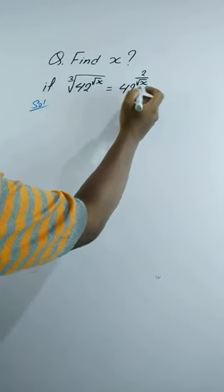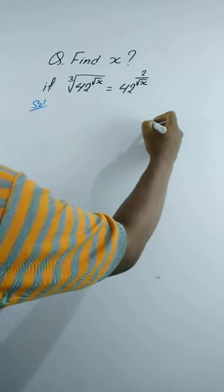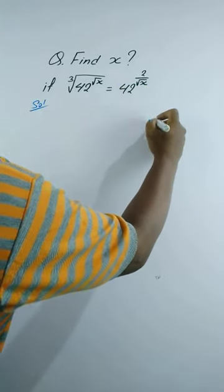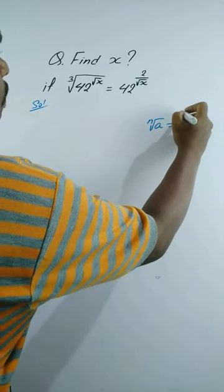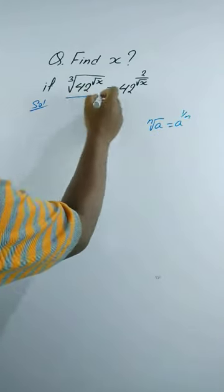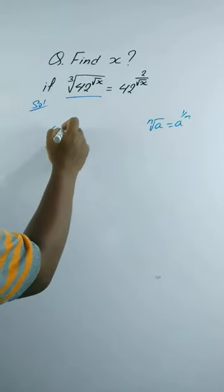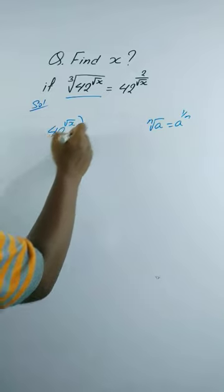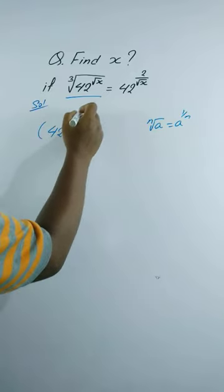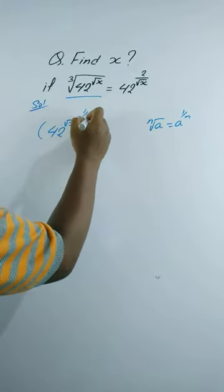Solution: we know that nth root of a is equal to a to the power 1 by n. So we can write the left side as 42 to the power square root x, whole to the power 1 by 3.